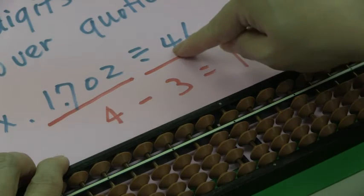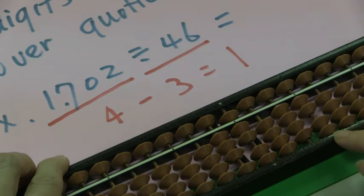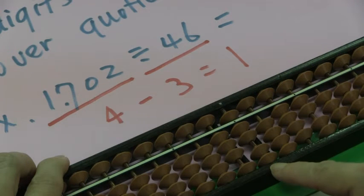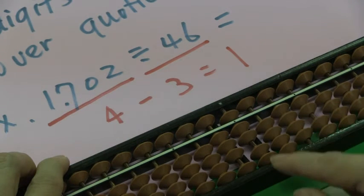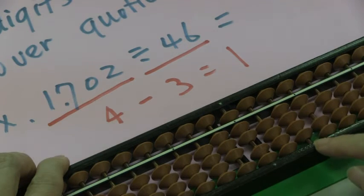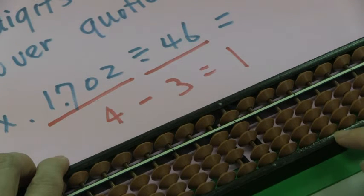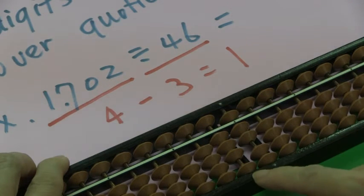1 times 4 is 4. Now, the remainder is 46. We use the quotient 7 times 6. It's 42. Subtract 42. And the remainder is 0. We know the answer is 37.